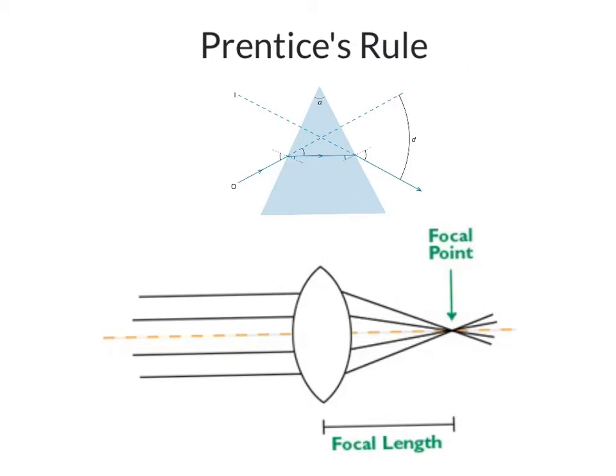So what is Prentice's Rule? In the picture of the lens, this dotted line is called the optical axis because it goes right through the center of the lens.